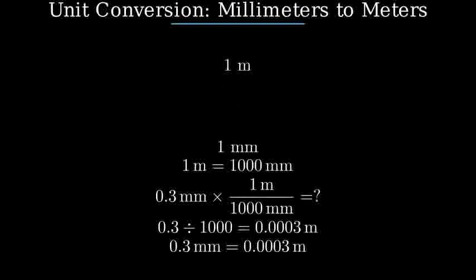So 0.3 millimeters is equal to 0.0003 meters. By understanding this conversion, we can easily switch between different units of measurement and make sure our calculations are consistent.